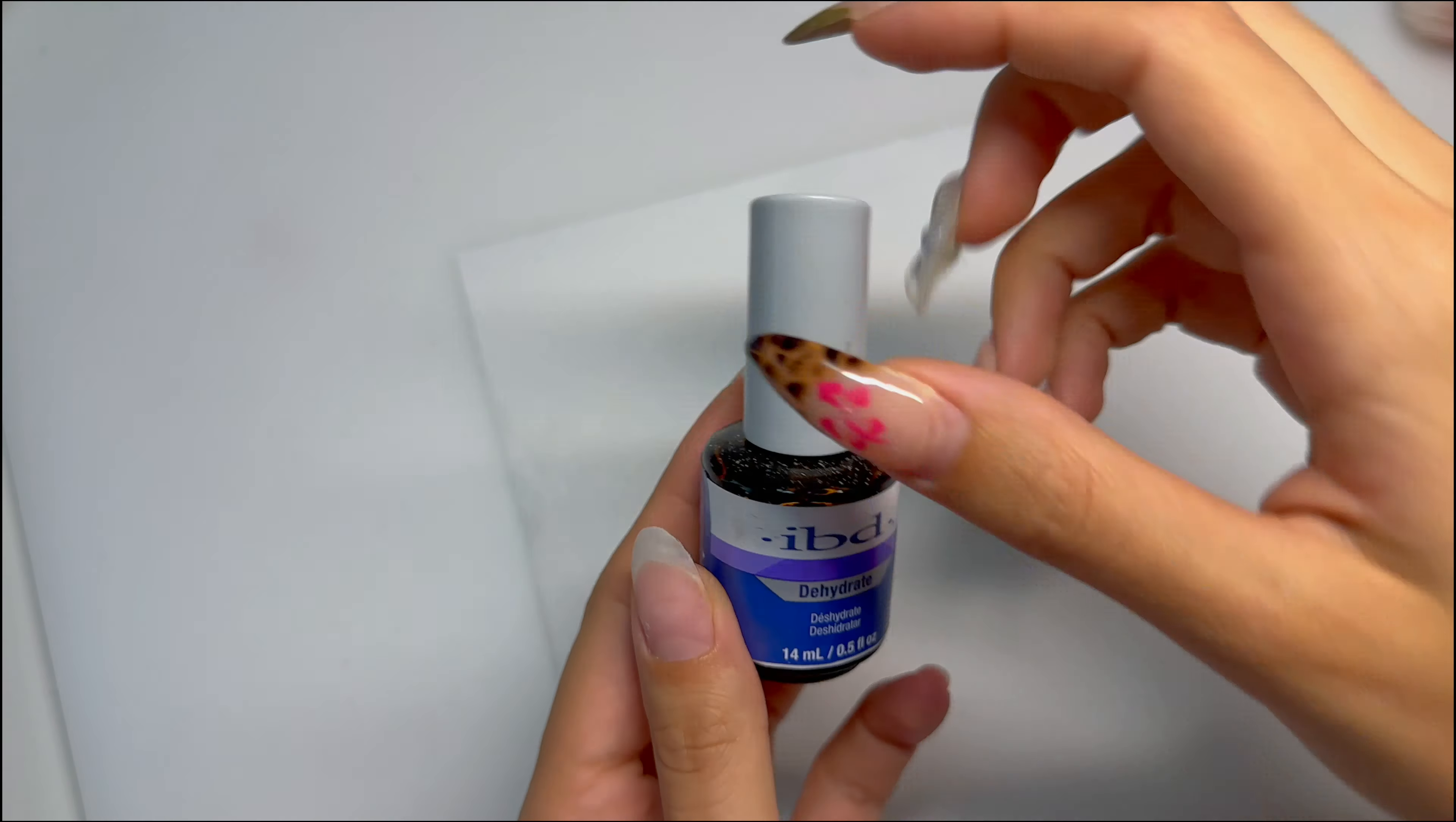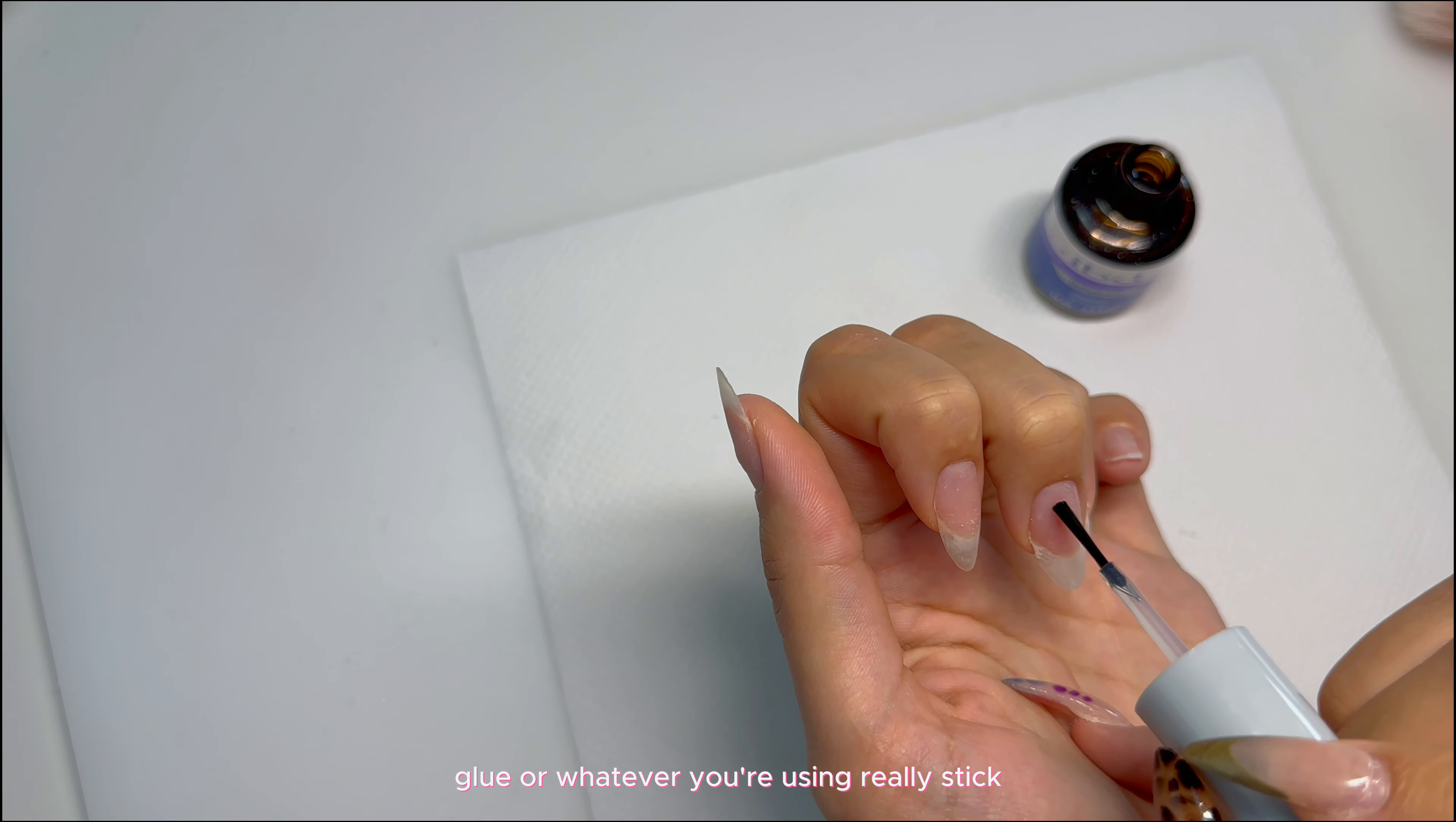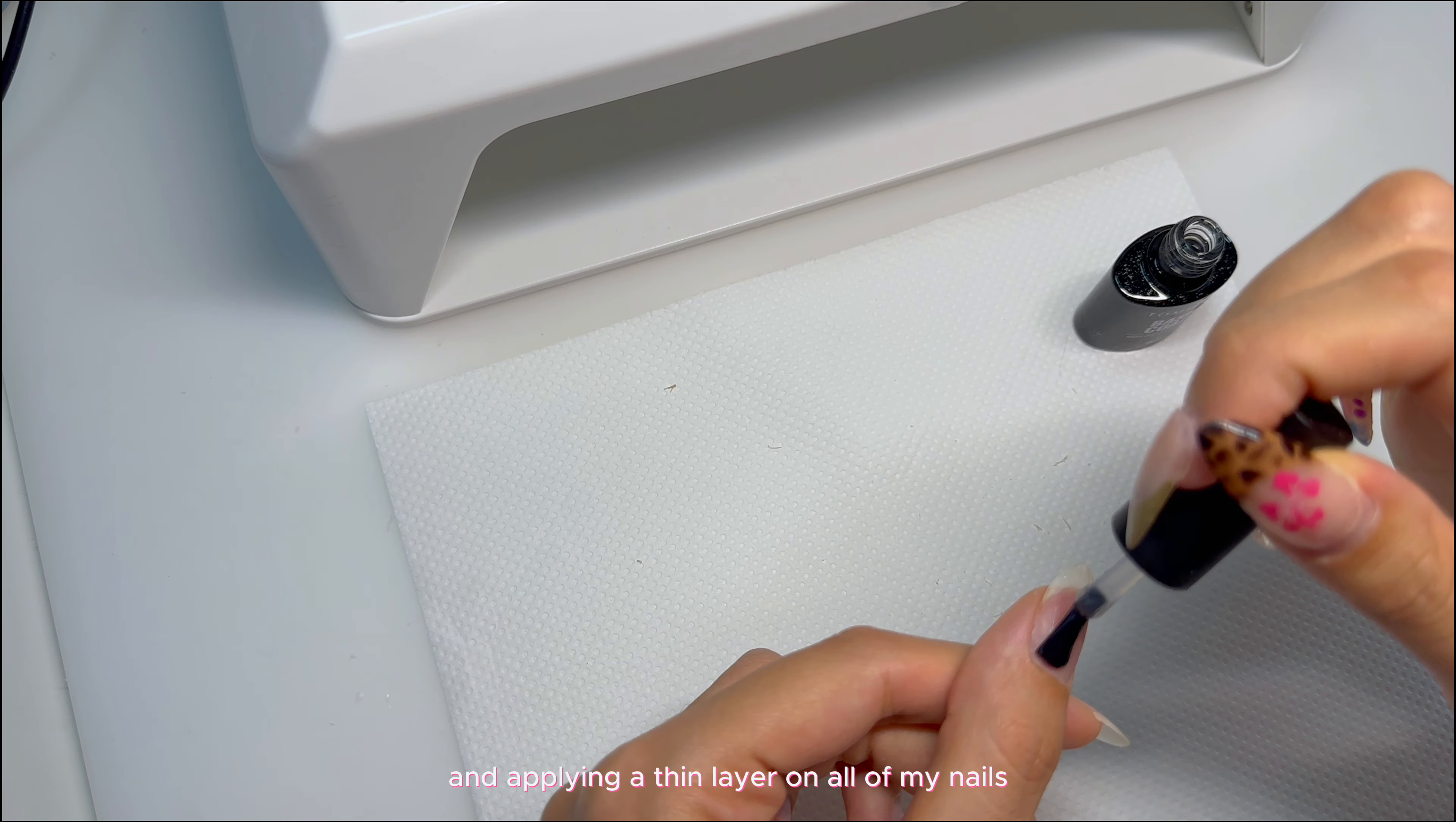Now I'm going to spray some alcohol on my natural nails and clean it. Then I'm going in with some nail dehydrator. This is to prevent any lifting or cracks in your nail. This will make the glue or whatever you're using really stick, so don't skip the dehydrator. It's really, really important.